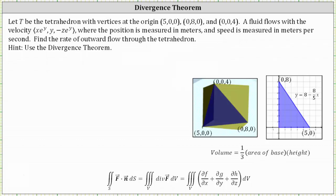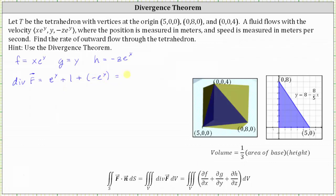Let's first find the divergence of the given vector field, where F is equal to the X component x·e^y, G is equal to the Y component y, and H is equal to the Z component -z·e^y. We begin with the partial of F with respect to X: differentiating x·e^y with respect to X, treating Y as a constant, gives us e^y. Then the partial of G with respect to Y: the derivative of y with respect to Y is one. Then the partial of H with respect to Z: differentiating -z·e^y with respect to Z, treating Y as a constant, gives us -e^y. Simplifying, the divergence of the vector field F is equal to one, which means the outward flow equals the triple integral over the solid region V of one dV.